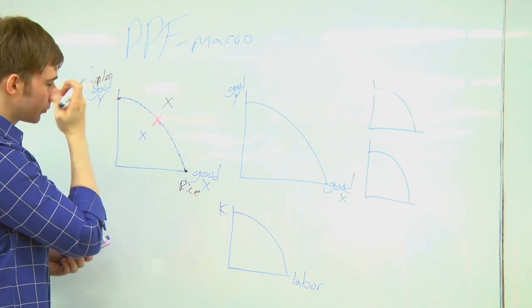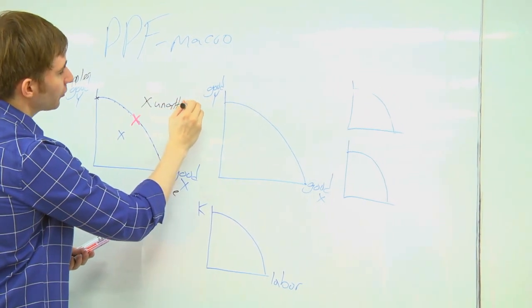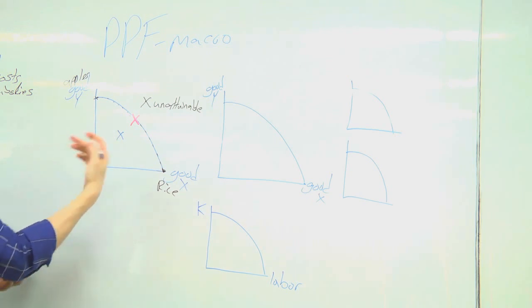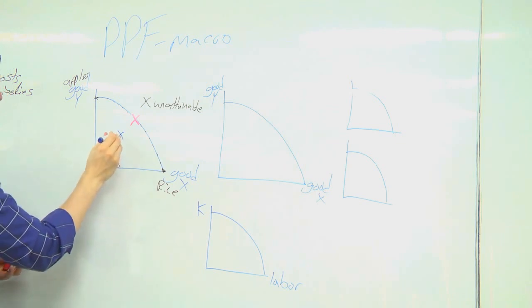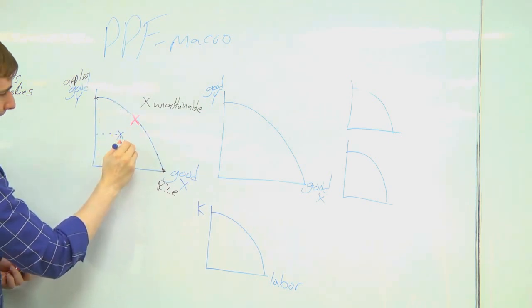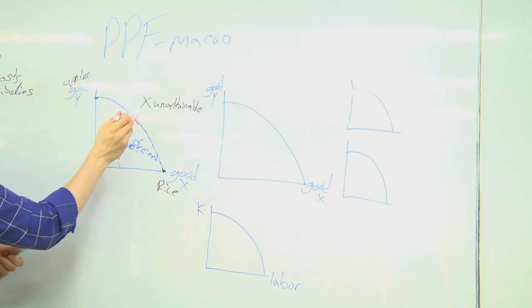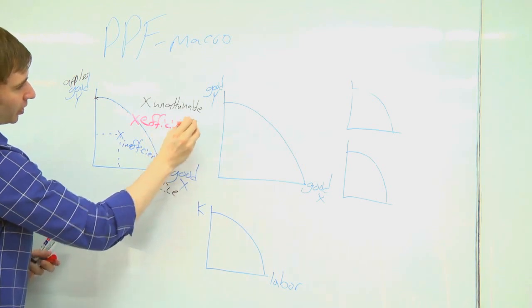If you're here at the X, this X dot is unattainable. It's not possible at current levels for your economy to produce at level X. If you're at the blue X, this is attainable but inefficient. You could be producing more. So it's saying you're producing this much and this much of the two goods. So you could be doing better. And then the red X is attainable and efficient. You're maximizing your resources to produce the most amount.